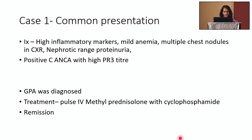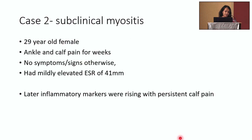Moving on to my second case, I would like to discuss a patient who came in with subclinical myositis. She was a 29-year-old female — an intern house officer at the time. She came to rheumatology with ankle and calf pain going on for weeks, which made her limp during ward rounds. There were no other systemic symptoms at the first presentation, and she had only very slightly elevated ESR on investigations.